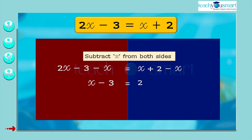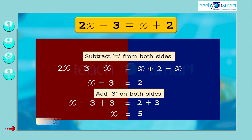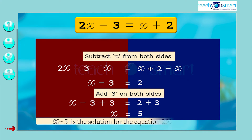To remove the constant part from the LHS, add 3 on both sides. That is, x minus 3 plus 3 equals 2 plus 3. We get x equals 5. So x equals 5 is the solution for the equation 2x minus 3 equals x plus 2.